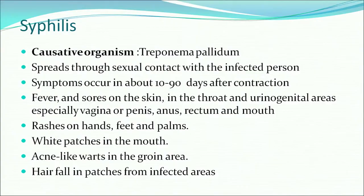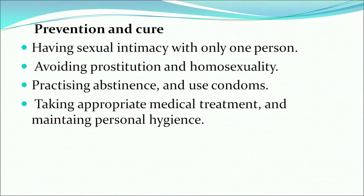The next disease is syphilis. Its causative organism is Treponema pallidum, and it spreads through sexual contact with the infected person. Symptoms occur from about 90 days after contraction — fever and sores in the skin, throat and urogenital areas, especially vagina or penis, anus, rectum and mouth; rashes on hands, feet and palms; white patches in the mouth; and acne-like lesions in the groin area. Prevention includes having sexual intimacy with only one person, avoiding prostitution and homosexuality, seeking medical treatment, and maintaining personal hygiene.